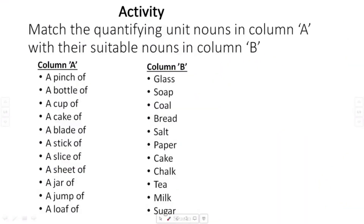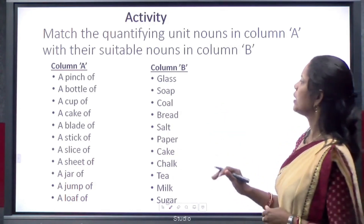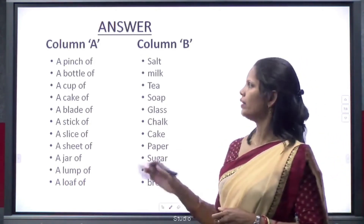Here is an activity for you. The instruction is: match the quantifying unit nouns in column A with their suitable nouns in column B. There are some quantifying nouns in column A and some uncountable nouns in column B. You have to match the quantifying nouns with their corresponding uncountable nouns. Do the activity, and after completing it, check your answer with the answers provided.